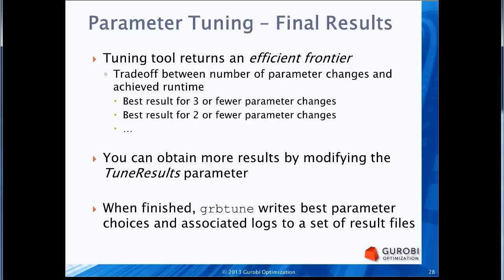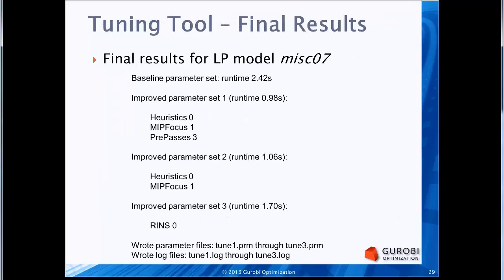When GRBtune is done, it writes the best parameter choices out to files, along with the associated Gurobi log files. For MIP model MISC07, the baseline runtime was 2.42 seconds. The tool found a parameter set producing 0.98 seconds, one producing 1.06 seconds, and one producing 1.70 seconds — changing 3, 2, and 1 parameters respectively. These represent the efficient frontier. The parameters are written to tune1.prm through tune3.prm, and the log files to tune1.log through tune3.log.